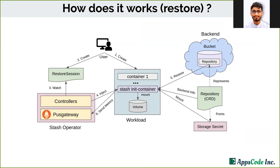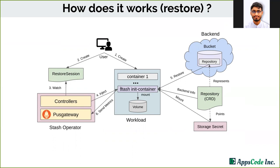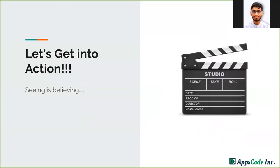The next diagram shows how restore works. In order to restore, the user has to create a restore session CR. This restore session CR contains the information of where the user wants to restore and what is the source of the backup data. When the user creates a restore session CR, the restore operator watches for the CR and injects a Stash init container inside the targeted workload. The targeted workload gets restarted with the init container, and the init container restores the data from the backend. Since we now have some understanding of how backup works, let's see it in action.